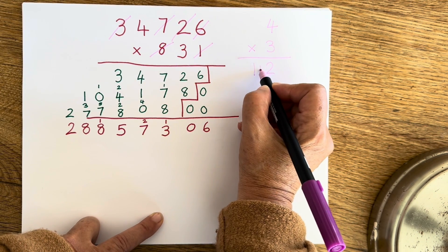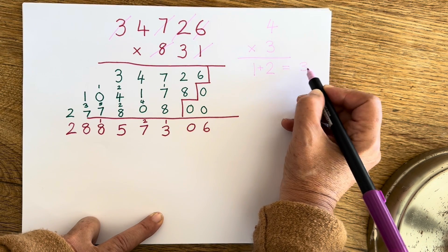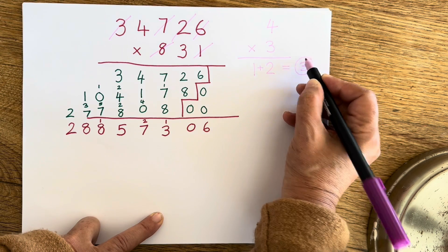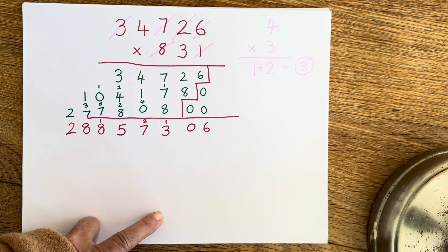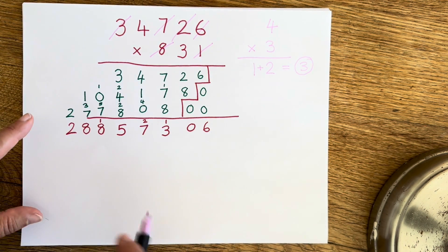...and just take that one and that two and add them together. One plus two equals three. And this is now the number that I'm looking for. If I get a three down here, then I'll know I've done the sum correctly.